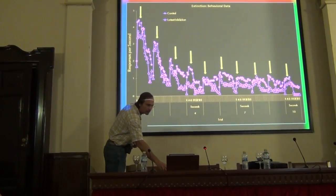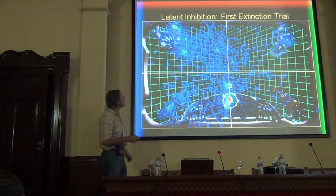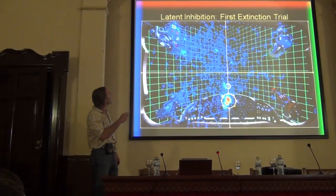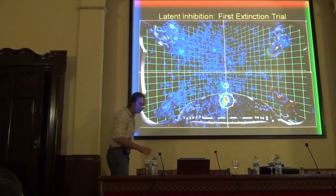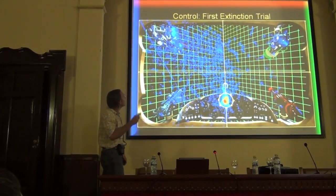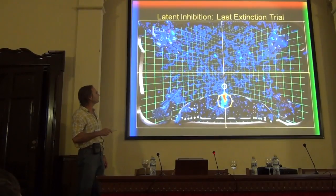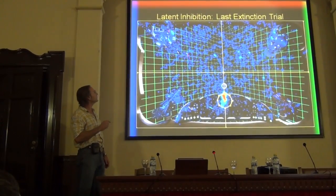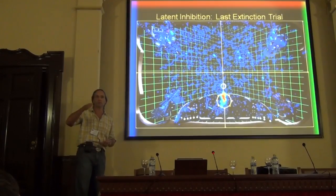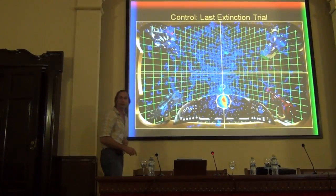What happens with their eye data during extinction? On the first extinction trial, they look at the sensor, then look up here for where the US is going to occur — back and forth. The control group does the same thing, back and forth. By the last extinction trial, the latent inhibition group looks at the CS and then looks everywhere — so that US search response is subject to extinction. And that's also true in the control group.